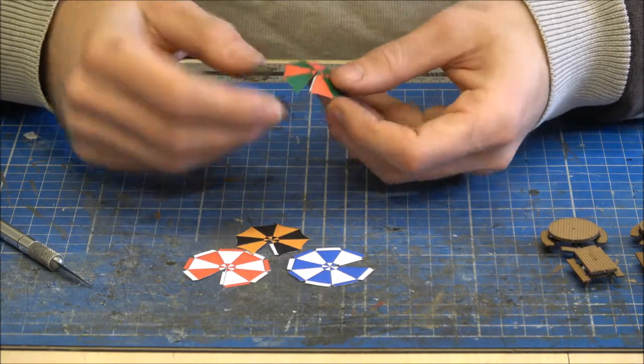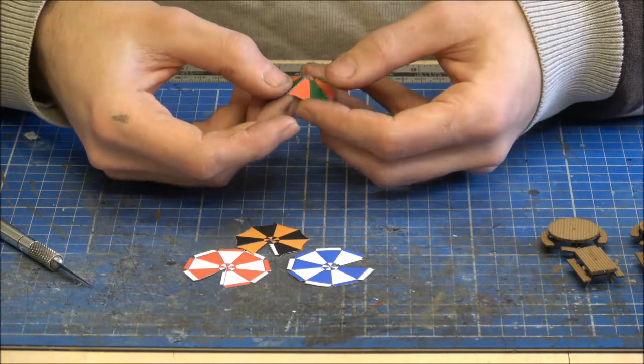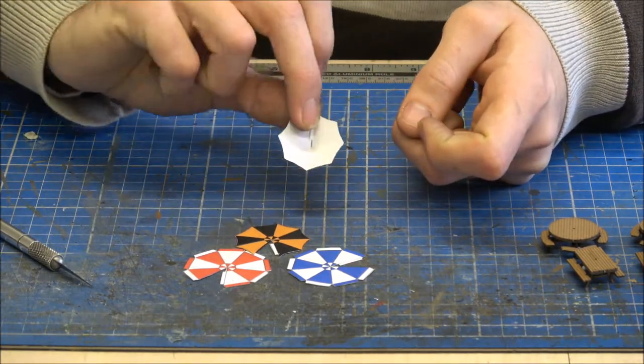And you will notice on them that there is a little white tab on there. And that's where it joins together. So it will make a nice little cone type shape.